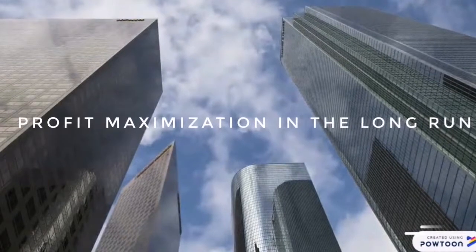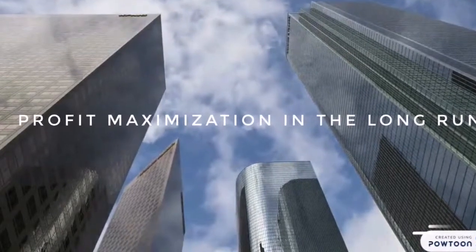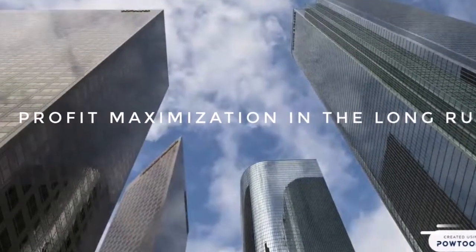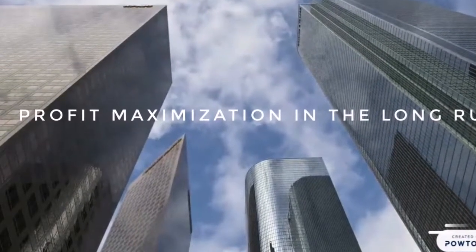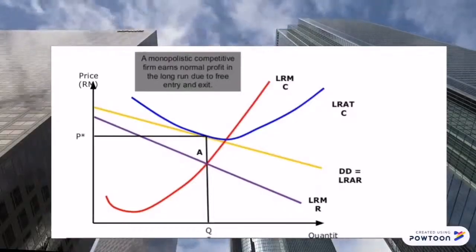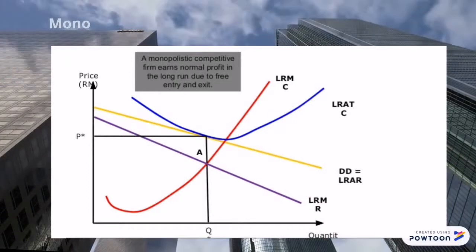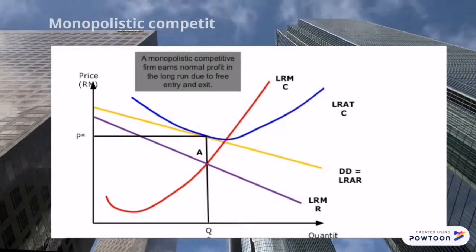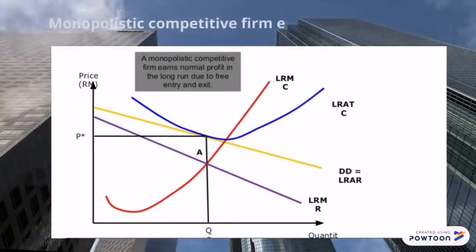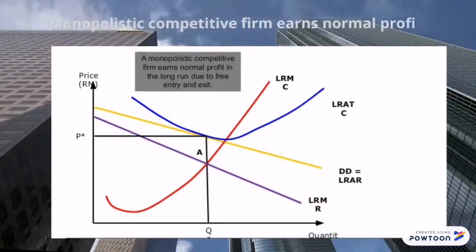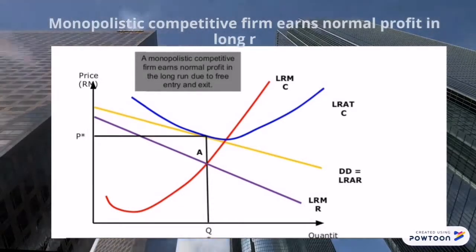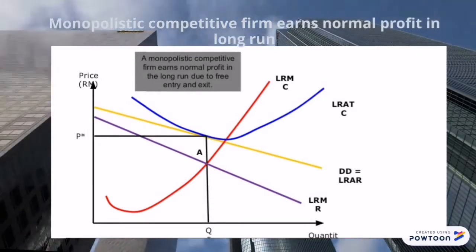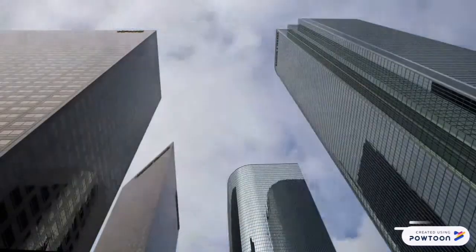Next, profit maximization in the long run. A monopolistic competitive firm earns normal profit in the long run, and this is due to the free entry and exit from the market.